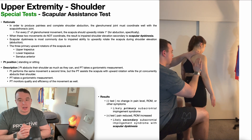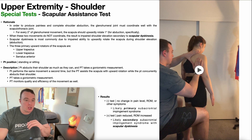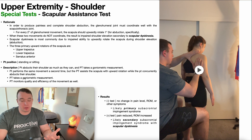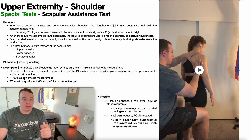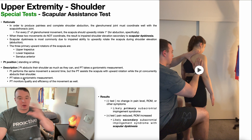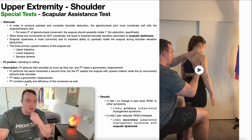Obviously, if you are holding the scapula with two hands, you are not going to be able to take a goniometric measurement yourself. You can eyeball it, but if you took a measurement at the beginning, you'll want someone else to assist with that. You're also going to monitor the quality and efficiency of the movement as well.